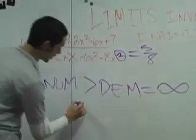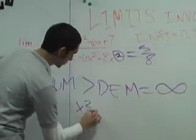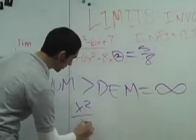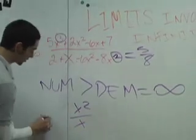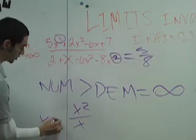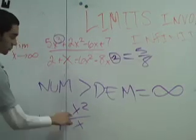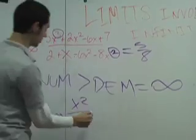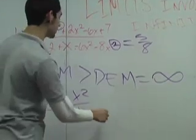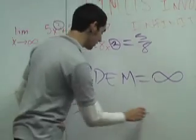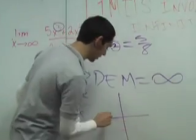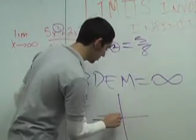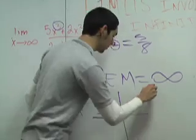Because, for example, if you have x squared over x and x is going to infinity, the number would be really big. So on the graph, it would just be shooting up.